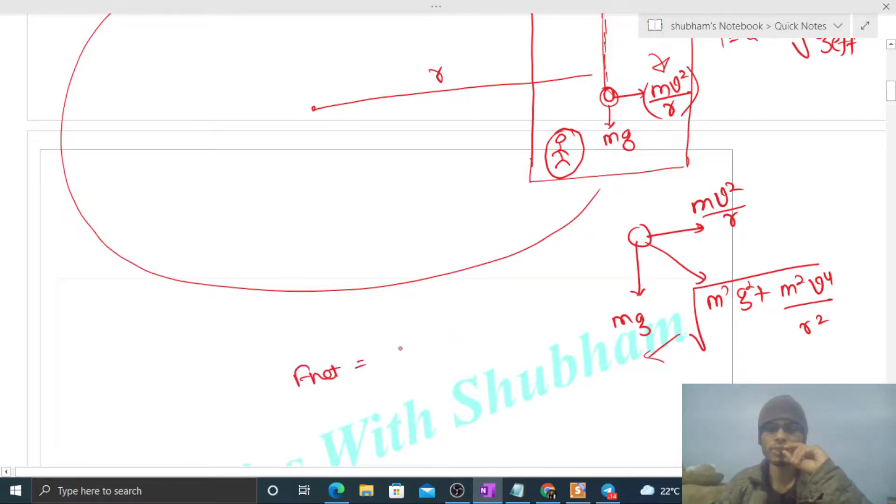So this is nothing but g_effective. So this will be your g_effective: √(g² + v⁴/r²).